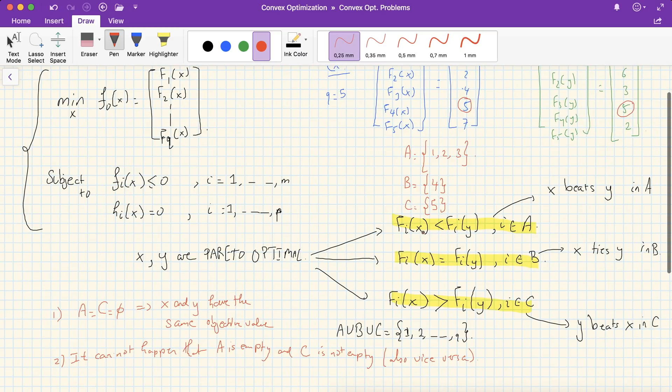So when we compare x with y, we say that we have traded off better objective values for those costs in A or for those indices corresponding to the costs in set A for worse objective values for other costs in the set C. That is, we chose x in a way that it beats y in some costs by sacrificing or trading off or compromising for other costs that correspond to indices in the set C.